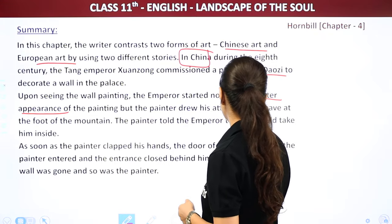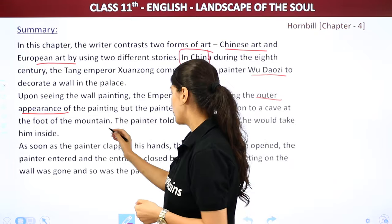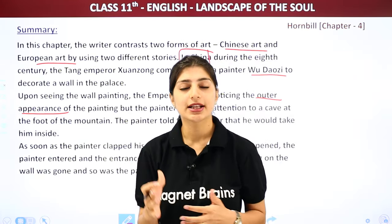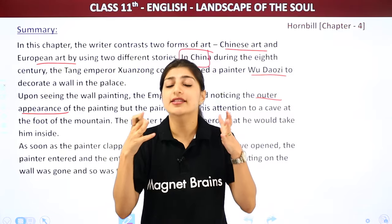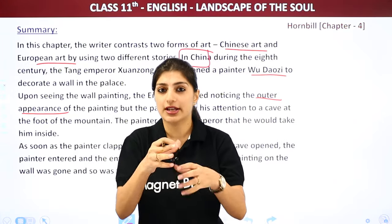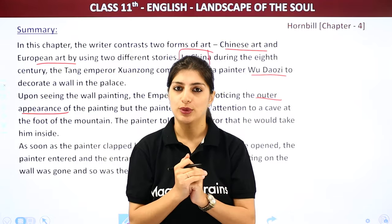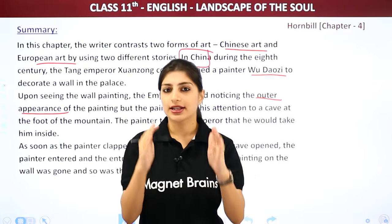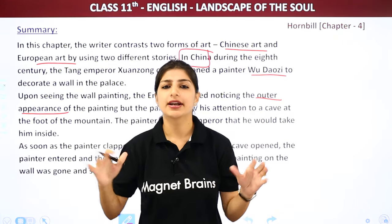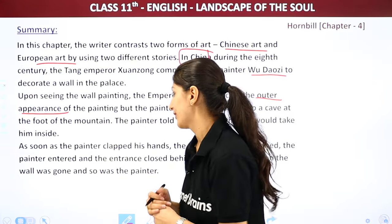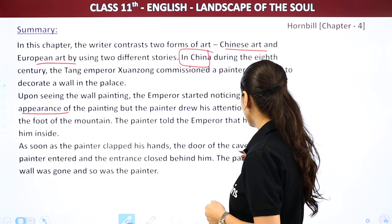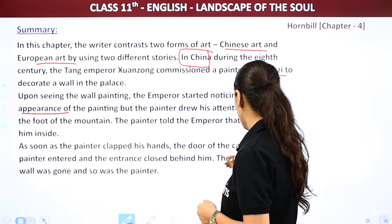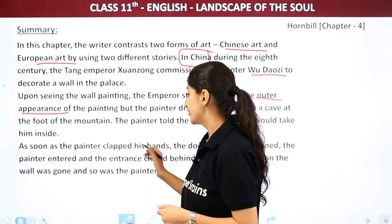The painter drew his attention to the temple at the foot of the mountain. The painter told the emperor that he would take him inside the painting. Inside the painting there was a cave, and he said he would take him inside it, where there were splendid things. As soon as the painter clapped his hands, the door of the cave opened. The painter entered and the entrance closed behind him. The painting on the wall was gone and so was the painter.